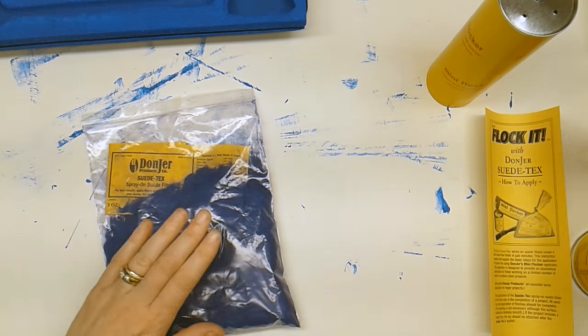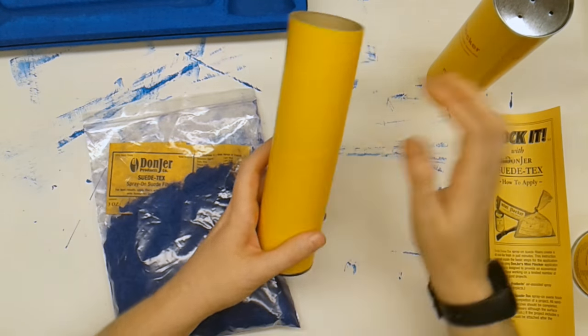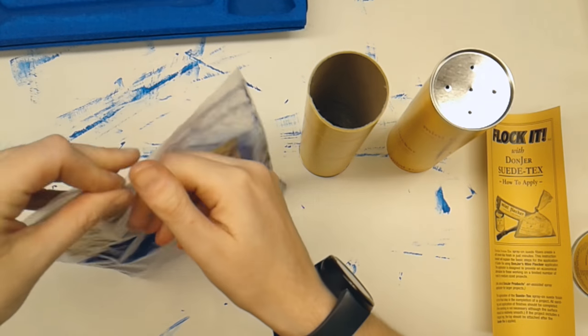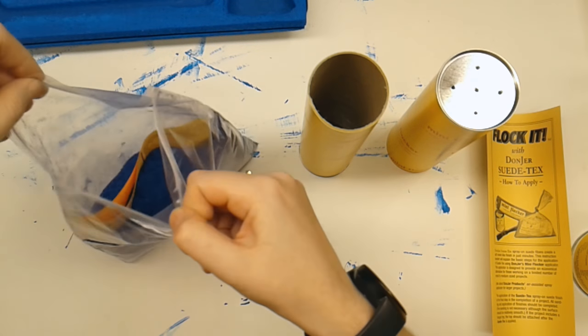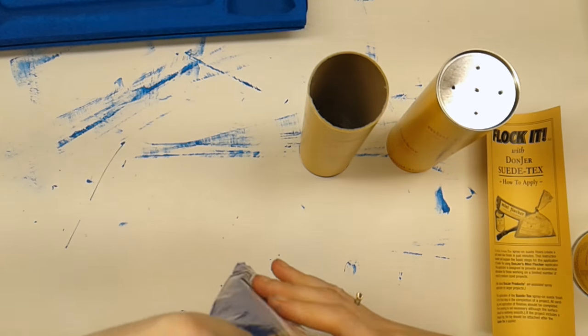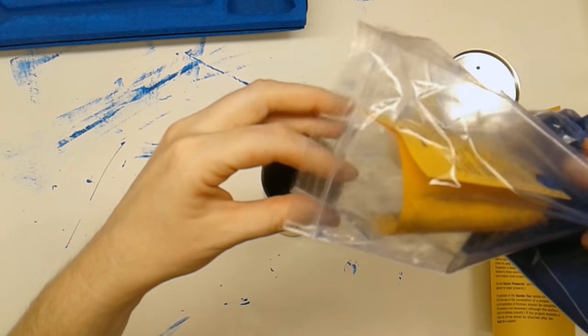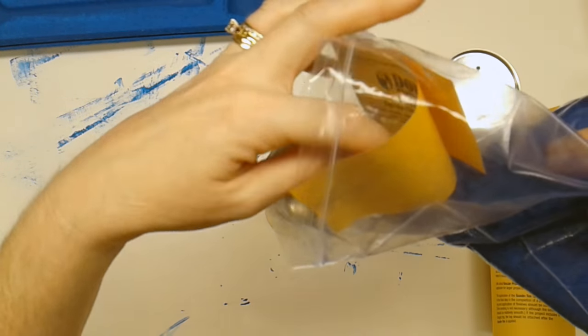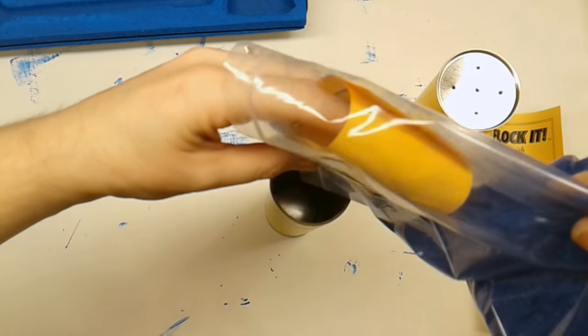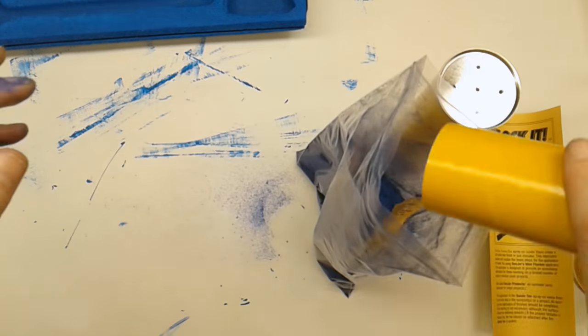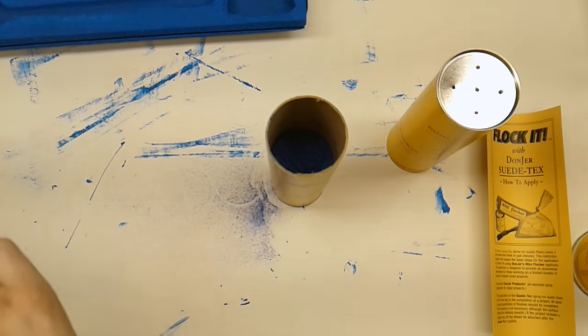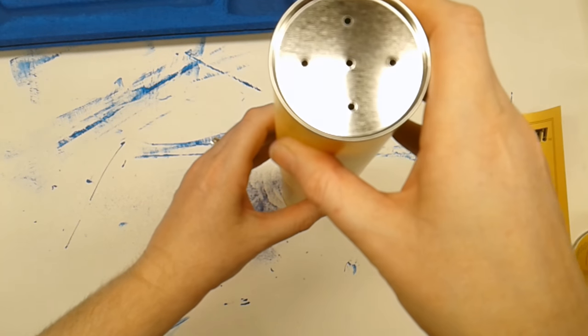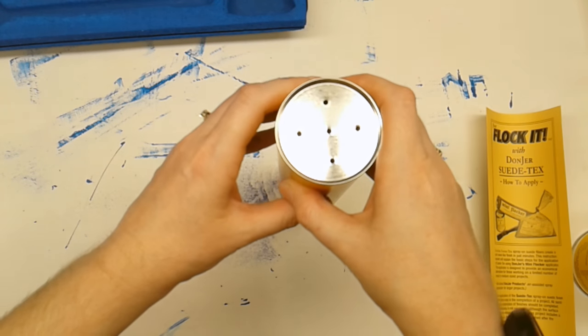The next thing to do is to get prepared, and that is to fill the mini flocker tube halfway full of the flocking. The flocking you can purchase that is the same color as the glue. That way, if there are any problems that didn't get covered with the flocking, it will be blue. That's about halfway full, so you're supposed to put the top on slowly so that it doesn't poof out on you.